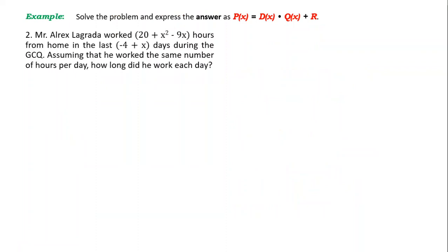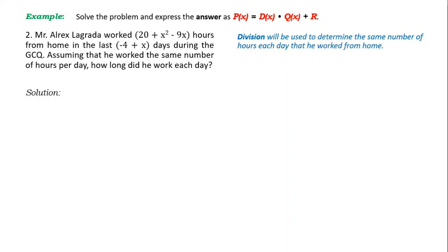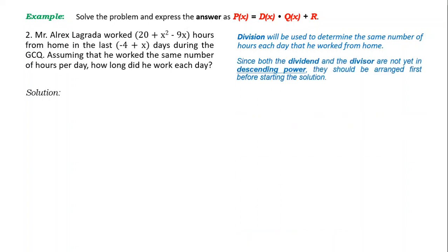Next, number 2 problem. Mr. Alrex Lagrada worked 20 + x² − 9x hours from home in the last x − 4 days during the GCQ. Assuming that he worked the same number of hours per day, how long did he work each day? Solution: division will be used. First, arrange the dividend and divisor in complete descending power: dividend becomes x² − 9x + 20, divisor becomes x − 4.